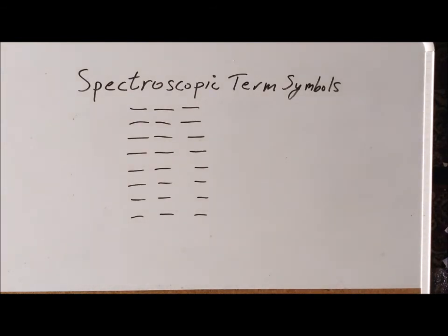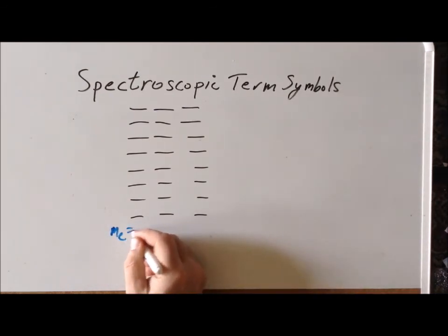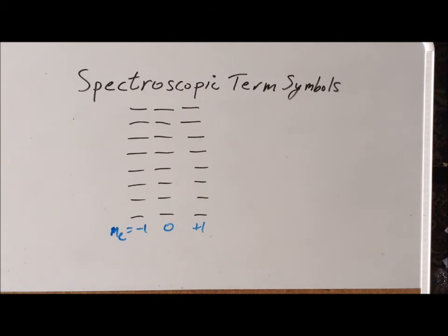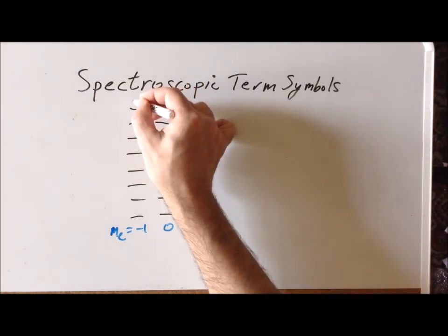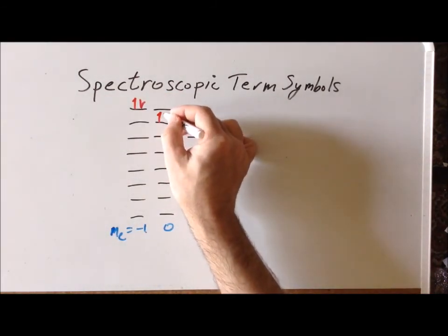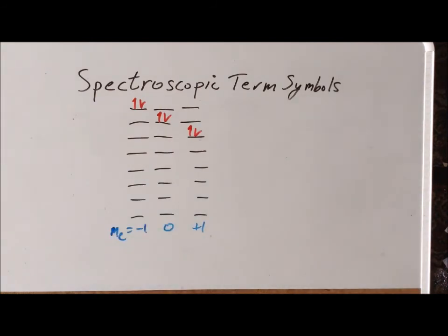Now we derive the remaining nine microstates for the p2 system. We remind ourselves that M sub L values for individual orbitals are minus one on the left, zero in the center, and plus one on the right. For these microstates, we look at states with opposite spins — one up spin and one down spin — consistent with the Pauli exclusion principle. We can put two electrons in the same orbital if they have opposite (paired) spins, giving three such configurations.